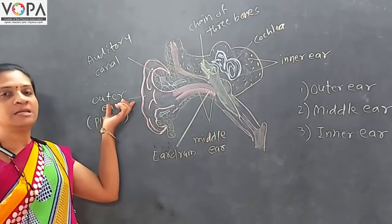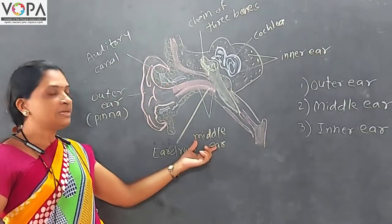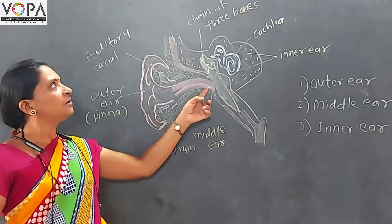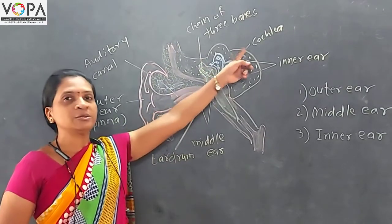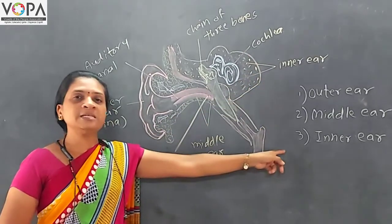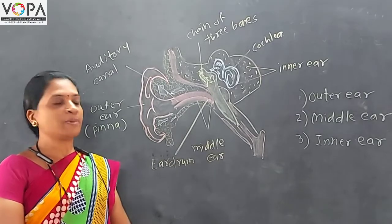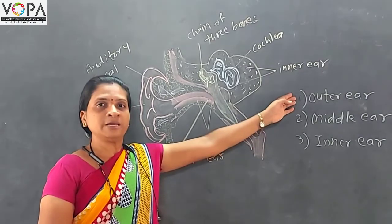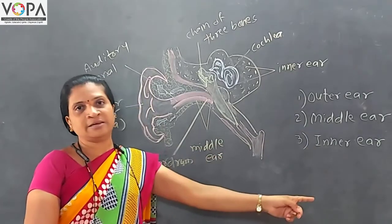Here you can see the outer ear, then auditory canal, then middle ear. This is the eardrum, chain of three bones, shell-like structure cochlea, then this is the inner ear. This human ear is now divided into three parts: one is outer ear, second one is middle ear, and third is inner ear.